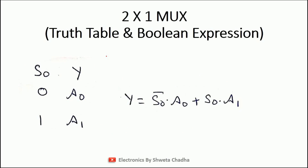Next is the truth table and Boolean expression. As we have just one select line, two combinations can be written: either select line S0 is equal to 0 or select line S0 is equal to 1, with one output Y. When the select line S0 is 0, A0, the first input signal, will be collected across the output. When select line S0 is 1, the second input A1 will be collected across the output signal.